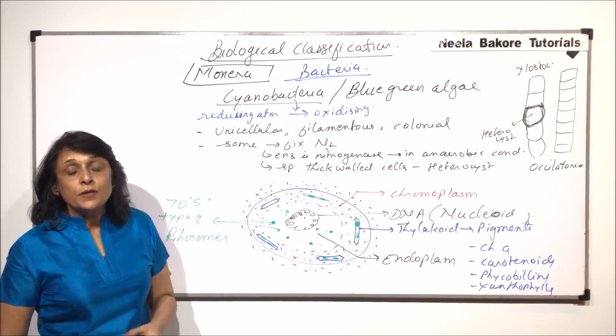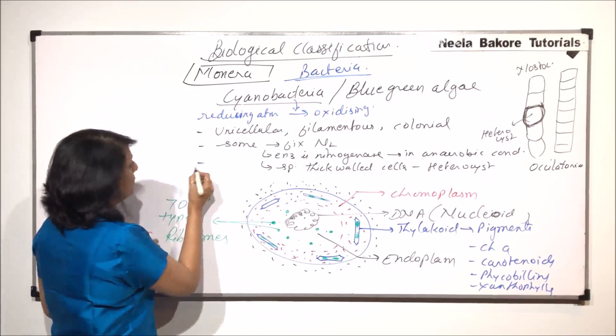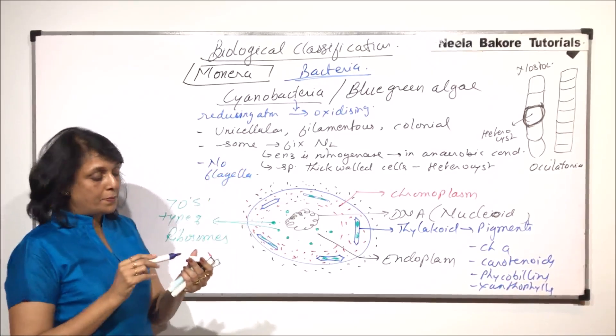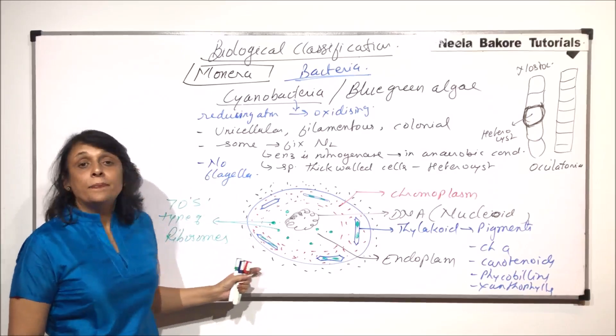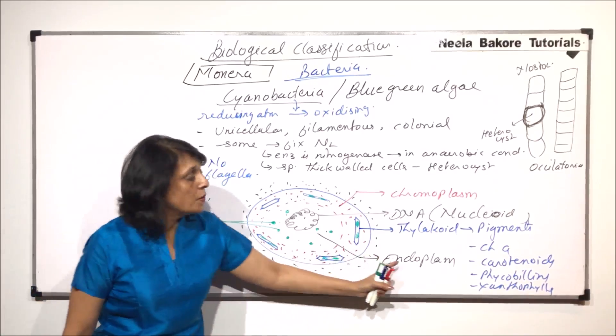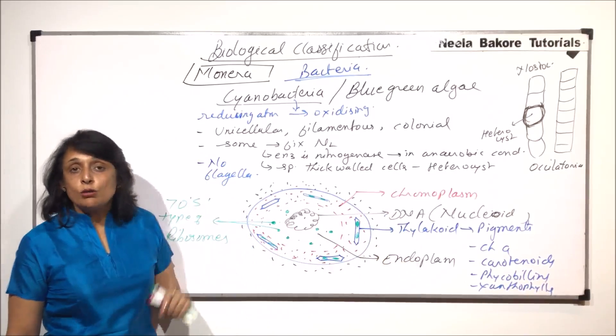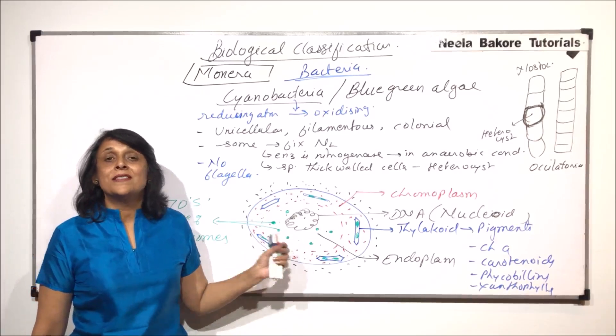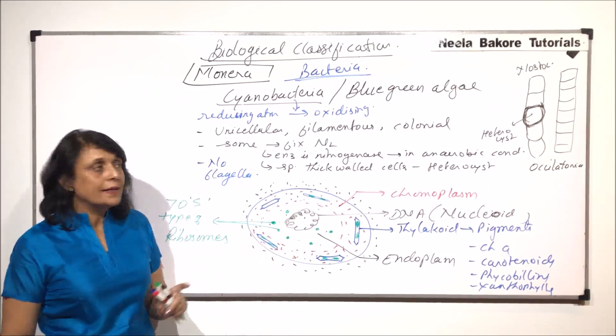One more difference which we find in cyanobacteria is they do not have flagella. No flagella, flagella totally absent in case of these cyanobacteria. And they perform photosynthesis because of presence of these pigments. And they also help in nitrogen fixation. They also are found in symbiotic associations with certain other organisms which we will take up a little later.